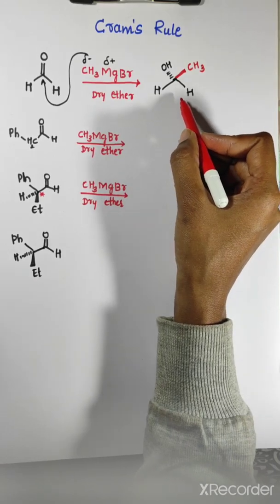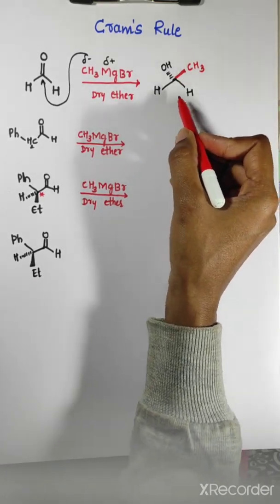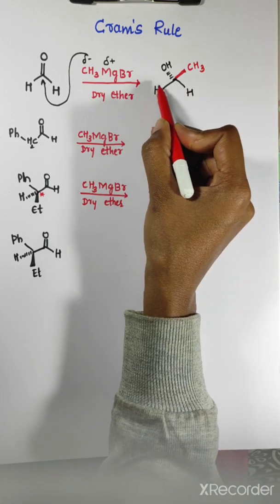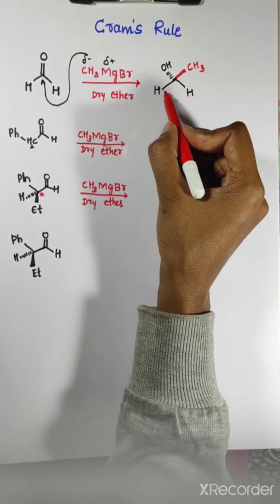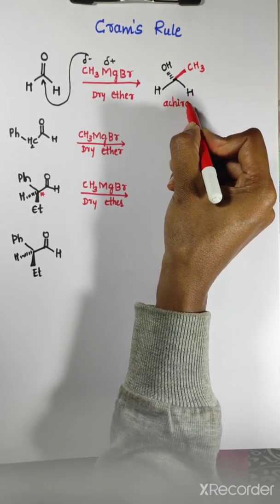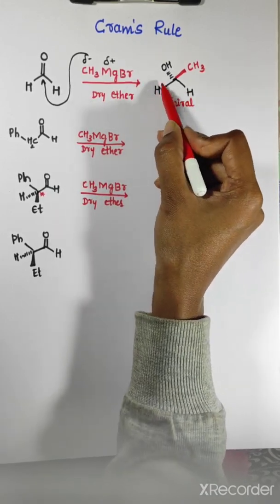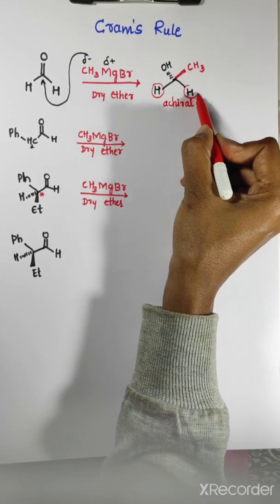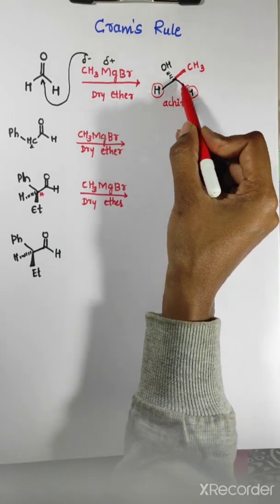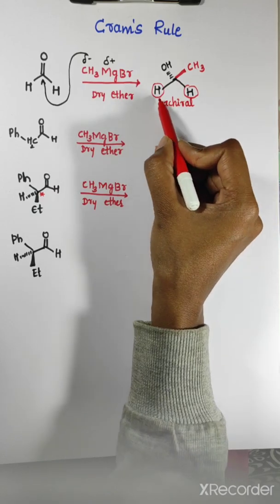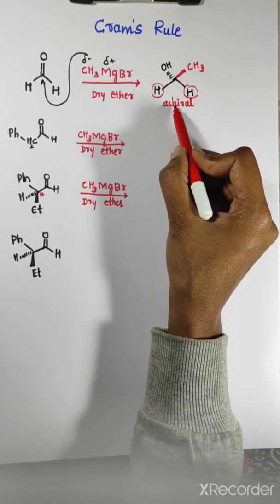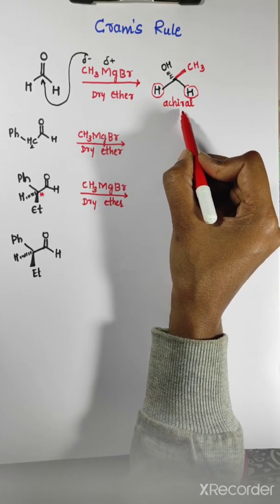The nucleophile CH₃ minus attacks the carbonyl carbon center. What is the orientation of this reaction? Here the two groups are similar - this H and this H are similar. Hence, this reaction is achiral because two groups are similar. Therefore, we will get an achiral molecule - we are getting an achiral isomer.